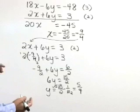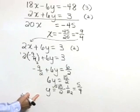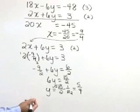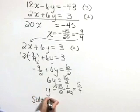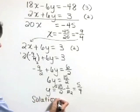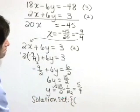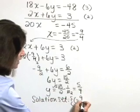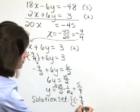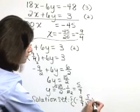We can check both of our values for x and y in both equations. That check does indeed verify that the solution set is x is equal to negative 9 fourths, y is equal to 5 fourths.